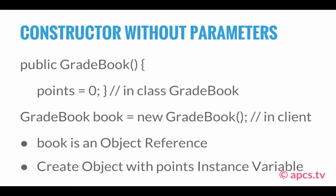Book is considered to be an object reference — it's referring to a GradeBook object. What we've done with this declaration in the client program is we've created an object with the points instance variable set to zero. The first two lines are part of the GradeBook class, and the last line is part of an external program. We're using the constructor method named gradebook — because the class name is GradeBook — in an external program to actually create an object called book of the class.